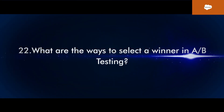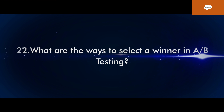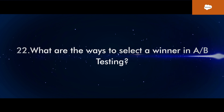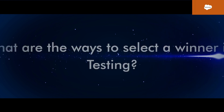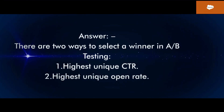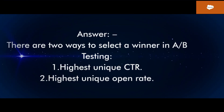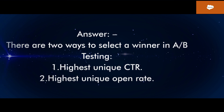Question 22. What are the ways to select a winner in A/B Testing? Answer: There are two ways to select a winner in A/B Testing: 1. Highest Unique Click Rate, 2. Highest Unique Open Rate.